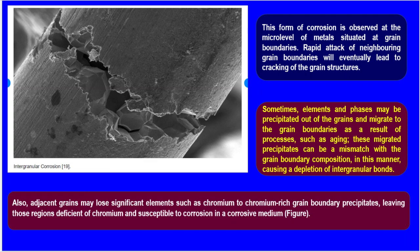This type of crevice corrosion may induce intergranular corrosion. Intergranular corrosion is observed at the micro level of metals situated at grain boundaries. Rapid attack of neighboring grain boundaries eventually leads to cracking of the grain structure. Elements and phases may precipitate out of the grains and migrate to the grain boundaries through processes such as aging, causing a depletion of intergranular bonds. Adjacent grains may also lose significant elements such as chromium to chromium-rich grain boundary precipitates, leaving those regions deficient in chromium and susceptible to corrosion.